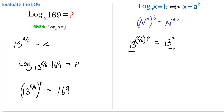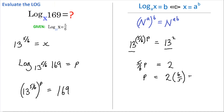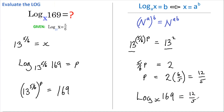This now means that the base of both sides is the same, therefore the powers must be equal. So 5/6 of P equals 2. If we multiply both sides by 6 over 5, we get P equals 2 lots of 6 over 5, which is of course 12 over 5. Remember that P is what we had to originally find, therefore we can say that log base x of 169 equals 12 over 5, or 2 and 2 fifths.